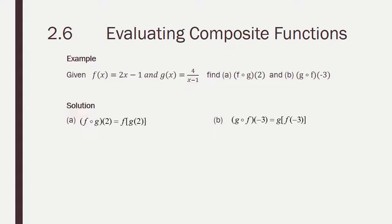Okay, let's look at another example. We've got f of x is 2x minus 1, and g of x is 4 over x minus 1. We're going to find f of g of 2 and g of f of negative 3. Now I've already set up the problem a little bit on a and b. See if you can finish the problem. Pause the recording, give it a try, and resume the recording to see how you did.